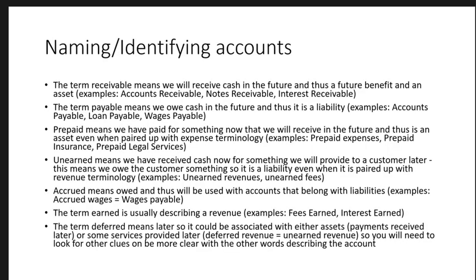When we are naming accounts and identifying what they are and where they belong, there are some general rules we can follow. There's no way to make a comprehensive list of every possible thing we want to track, but there are some things that can help us remember. 'Receivable' means asset — something you're going to get in the future, a future benefit, which is the definition of an asset. 'Payable' is almost always going to be a liability — it means we owe somebody cash.